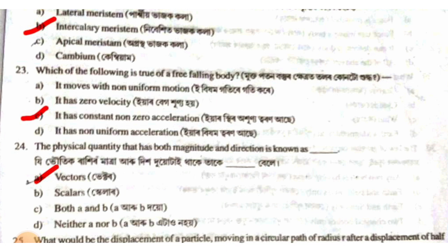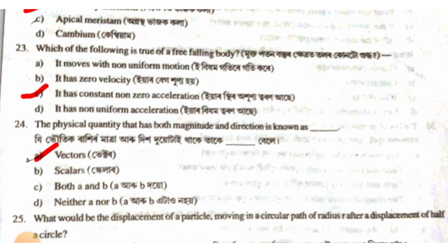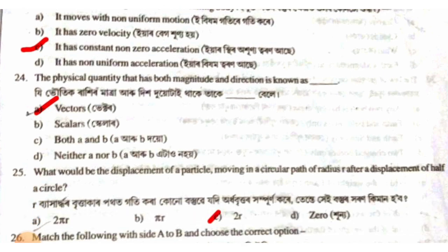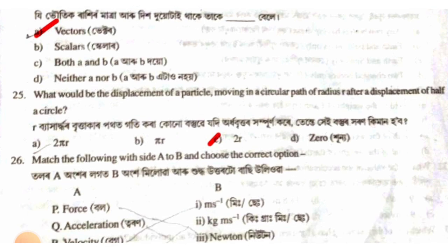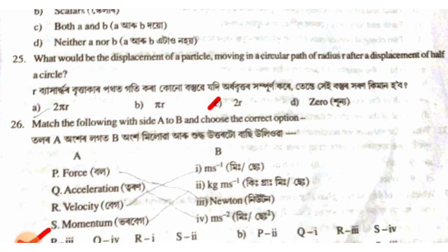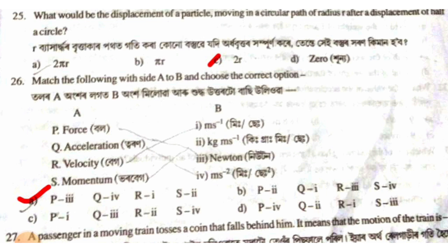A body has constant non-zero acceleration. Vector addition: the resultant of vectors. The answer is option C — the force is in Newtons.